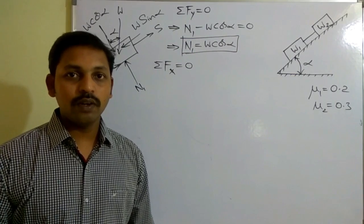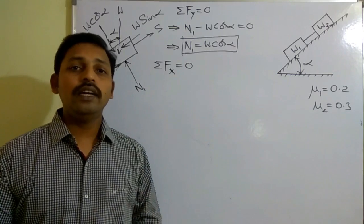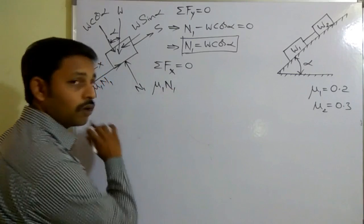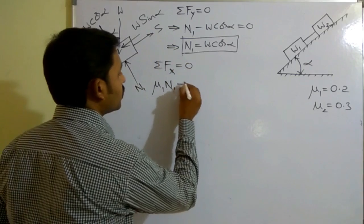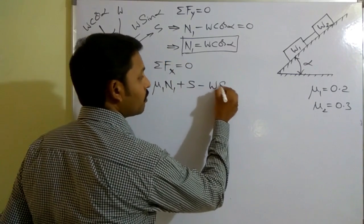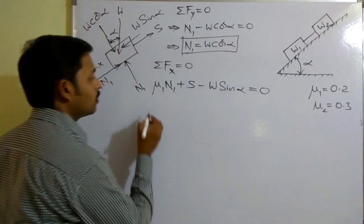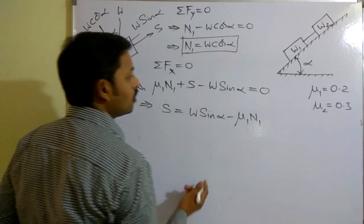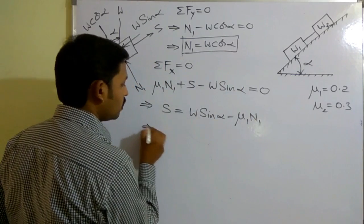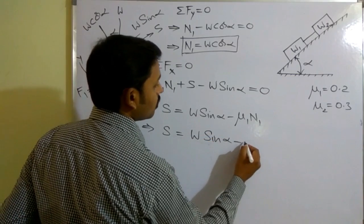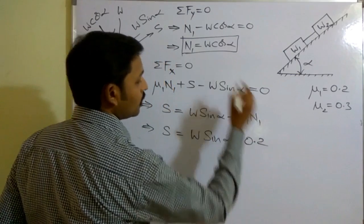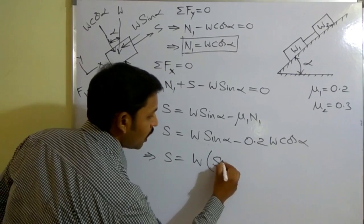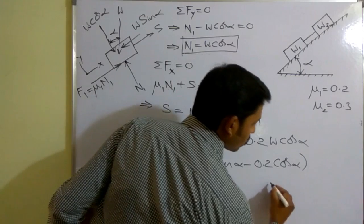Now let us consider sigma Fx equals 0. Along the x-direction, mu1 times N1 is along positive x, S is along positive x, and W sin alpha is along negative x. Setting this equal to zero: S equals W sin alpha minus mu1 times N1. Substituting N1 equals W cos alpha gives S equals W sin alpha minus 0.2 times W cos alpha.